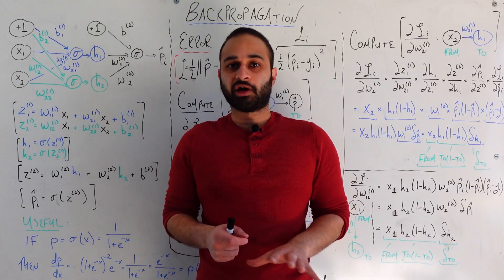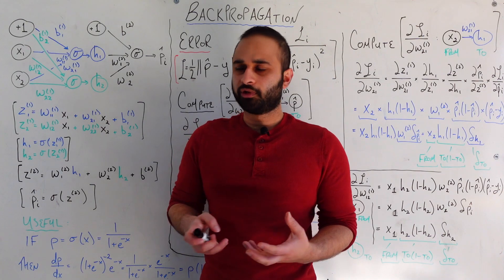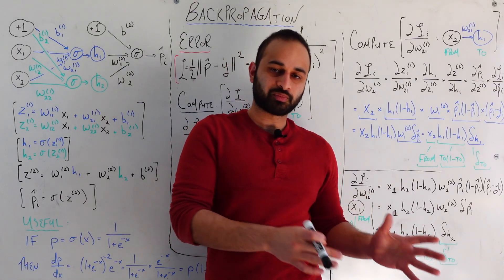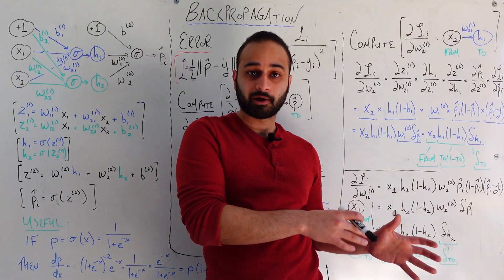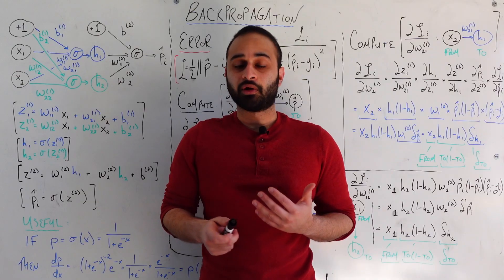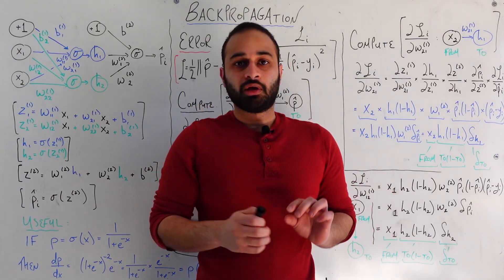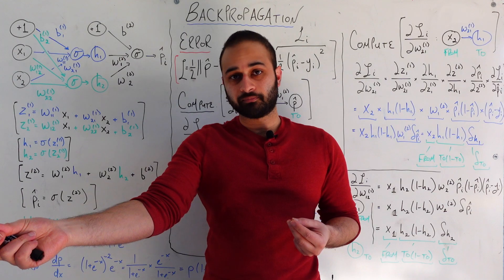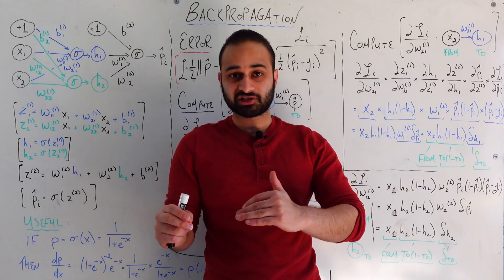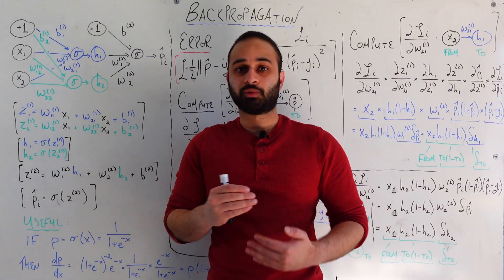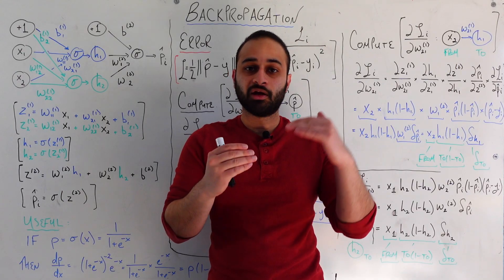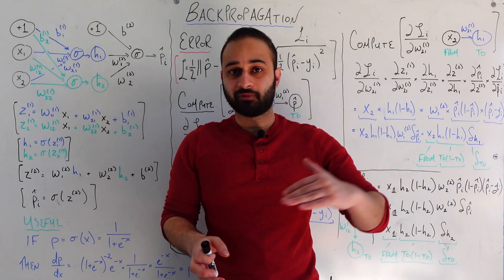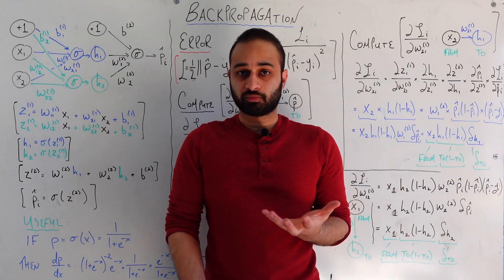We're going to be using the technique called gradient descent. We basically start by initializing all of the w's and b's to some random values — maybe between zero and one. Those random values probably aren't going to be the correct ones, but it's a starting point. Then we ask: given some error function, how do small changes in each of these nine w's and b's affect the error? We want to travel in the direction where the error function is being minimized the fastest. So we recompute the gradient, go in that direction, recompute again, and hopefully arrive at a point where all the w's and b's minimize the error, meaning our neural network is doing well.